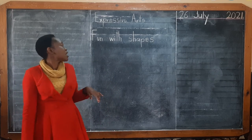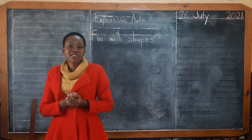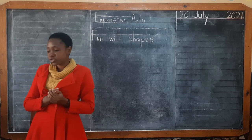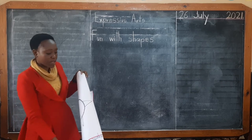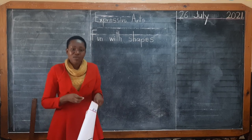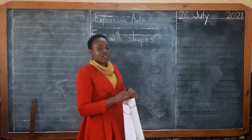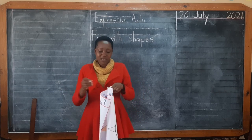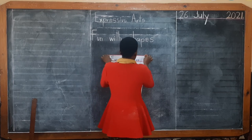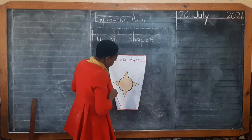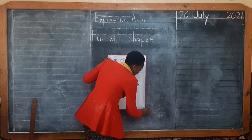So now we want to have fun with the shapes I've shown you. We're going to make something using these shapes. We're going to make a sun using the shapes. I drew a sun here for you using the shapes so that you can identify them and make the sun together.